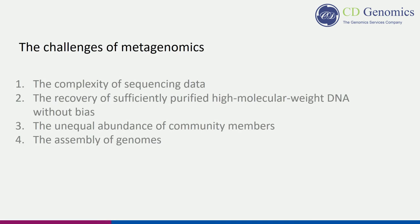Metagenomics faces several challenges. First, the complexity of sequencing data — metagenomics generates unprecedented amounts of data, increasing difficulty in bioinformatics analyses. Second, recovery of sufficiently purified high molecular weight DNA without bias, which is important for genome sequence assembly; rigorous cell lysis is needed but may shear DNA fragments. Third, the unequal abundance of community members — random shotgun sequencing coverage is excessive for dominant members and absent for infrequent members. Fourth, the assembly of genomes in mixed communities, especially when there are more than 20 species.